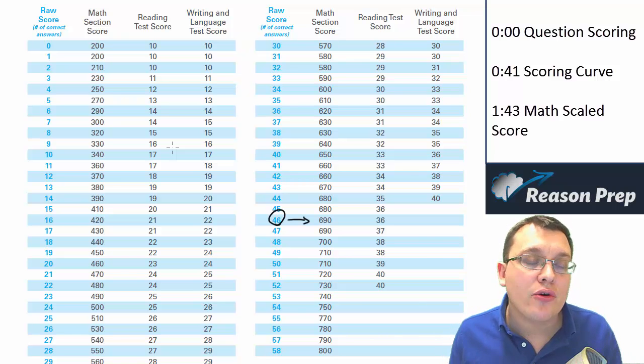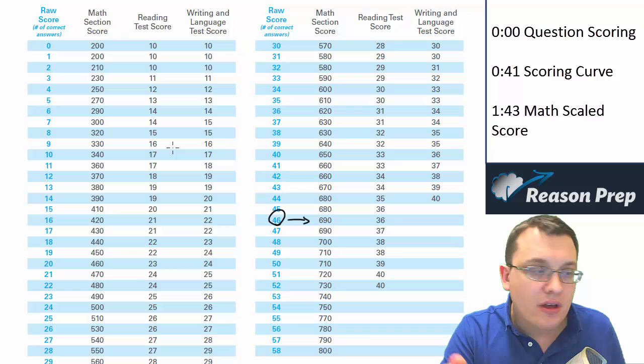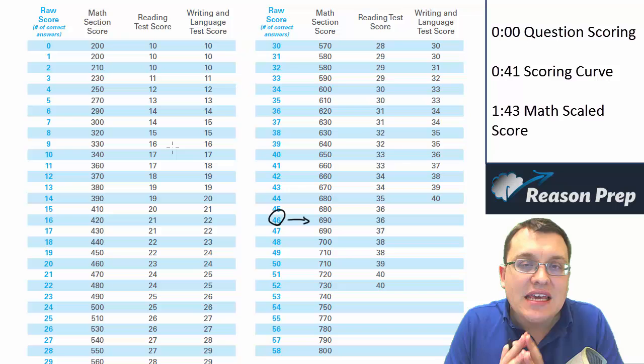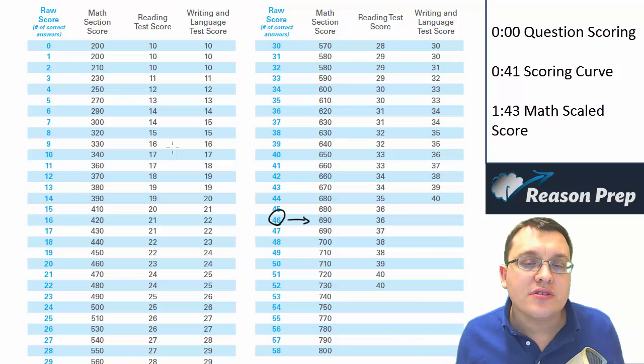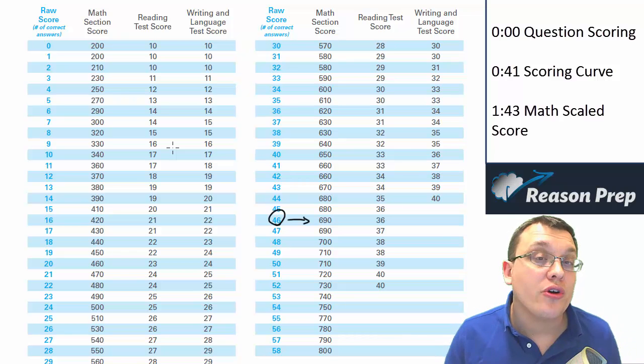So it's not going to matter whether you take test A or test B or test C on any given date, or that you take it with this cohort or that cohort, this group of students or that group of students. They're going to allegedly even all out all those differences so that whenever you take the test you're going to get the score that you allegedly deserve. So don't worry about when you should take the test, what month is best. Just focus on taking the test when you're ready.